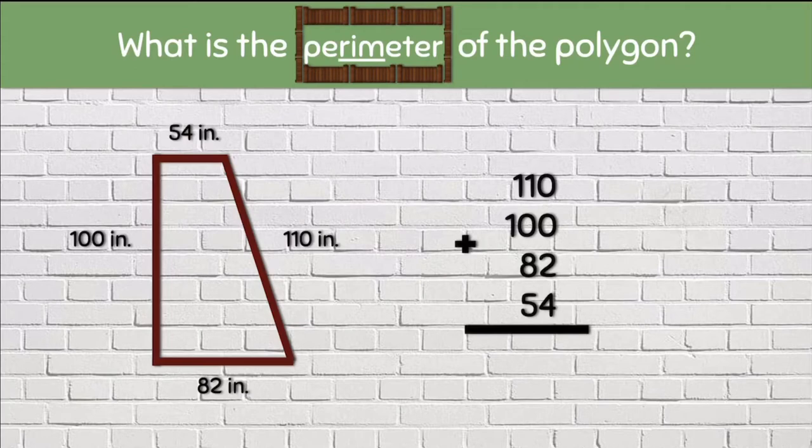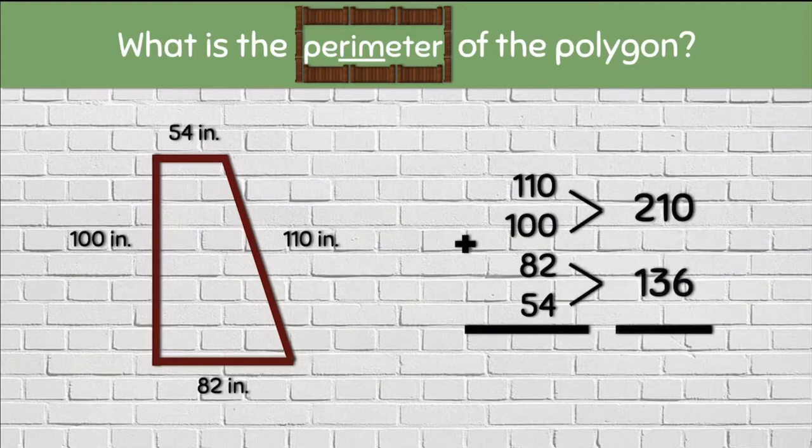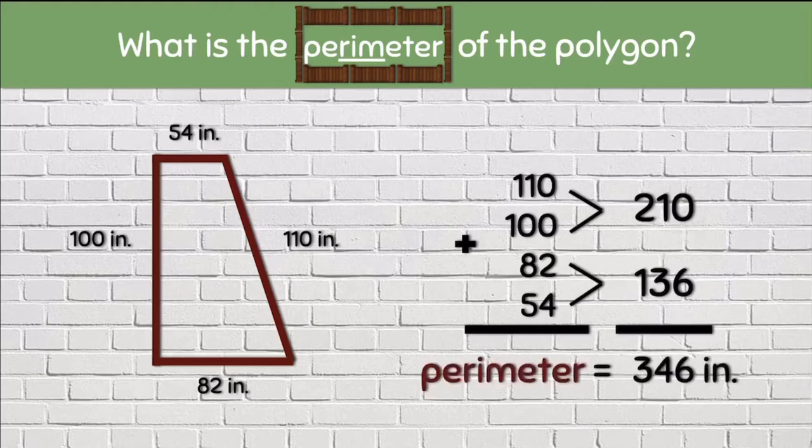Let's go ahead and add 110 plus 100. We know that makes 210. If we add 82 plus 54 we get 136. Now we can add 210 plus 136. We will get 346 inches. So we know that the perimeter of this polygon is 346 inches.